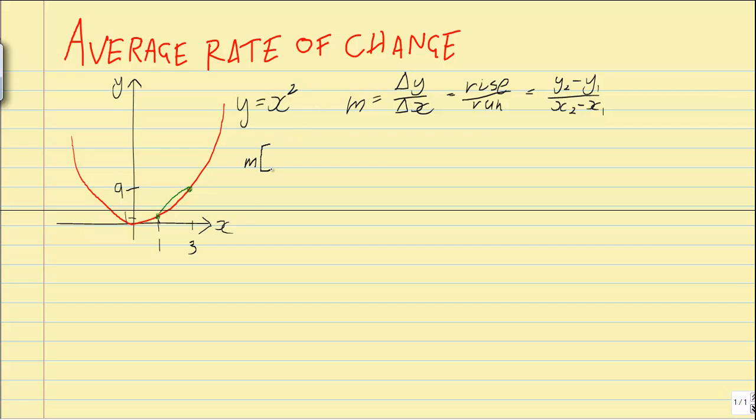Using this method, the gradient across the interval 1 to 3 equals y₂ minus y₁, which is 9 minus 1, over x₂ minus x₁, which is 3 minus 1. That gives us a gradient of 4.